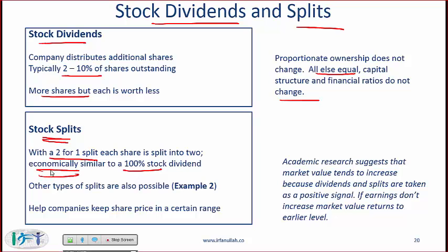A 100 percent stock dividend and a 2-for-1 split are economically similar from a shareholder perspective, though there are accounting differences which are not something to worry about. The major reason companies do stock splits is to maintain the share price in a range that makes shares affordable. Academic research suggests that market value tends to increase because dividends and splits are taken as a positive signal. If earnings don't increase, however, market value returns to its earlier level.